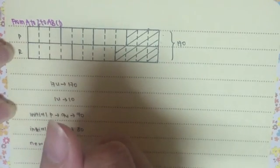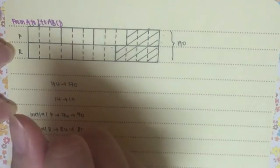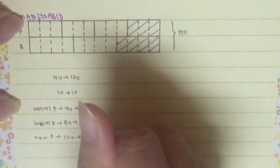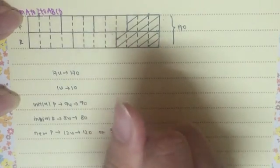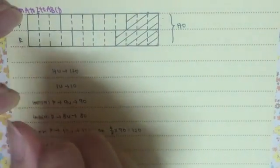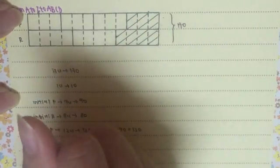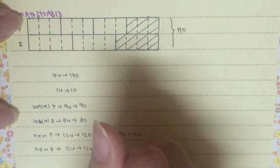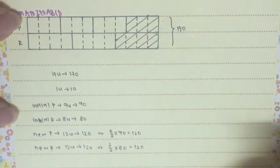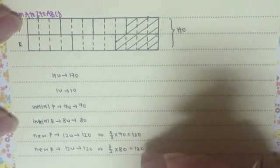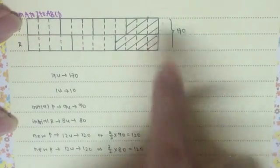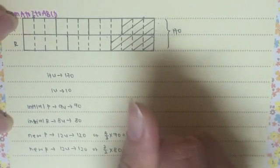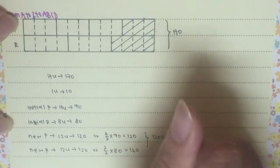Then, the new P will turn out to be, you can use twelve units to get 120, or, because initially it's 90, so you actually get four over three times 90, this also gives you 120. Then just note that the value actually turns out to be the same, so this means that today, both have equal number of Pokemon, equal number of Pikachu.